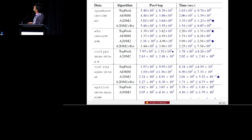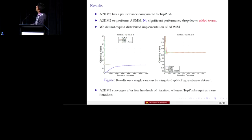Let's take a look at these results. You can see that our A2DM2 algorithm is almost comparable with the top push in terms of the performance, which is the positive at the top and also the time. In some cases, it can outperform the top push. And also in terms of the performance, it's almost the same. You can see in all of these results, our A2DM2 algorithm is much better than ADMM in some of the cases that ADMM doesn't exist because it takes too long, so we couldn't include it into the simulation results.